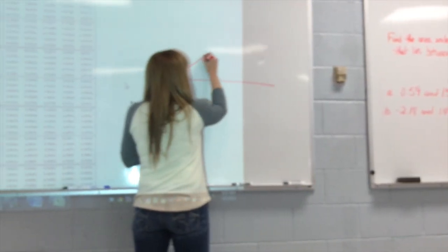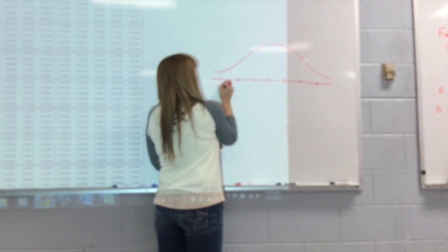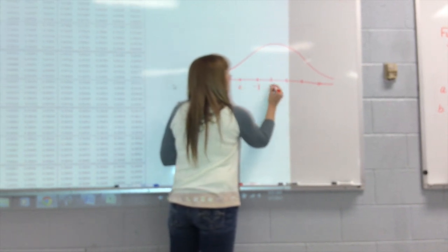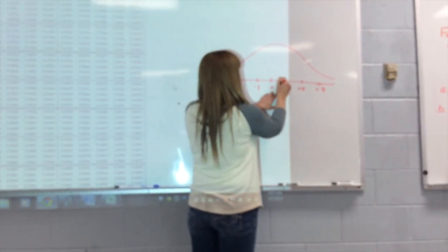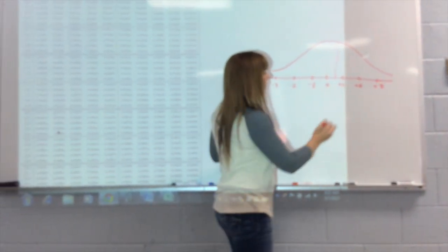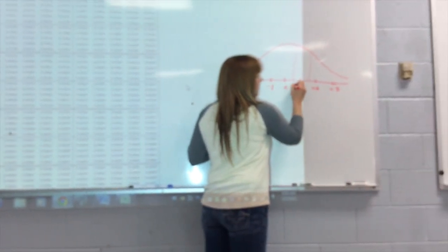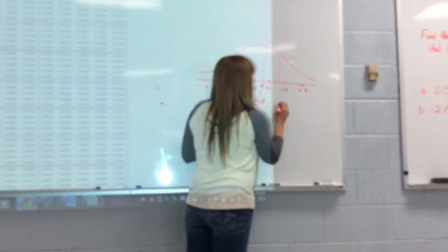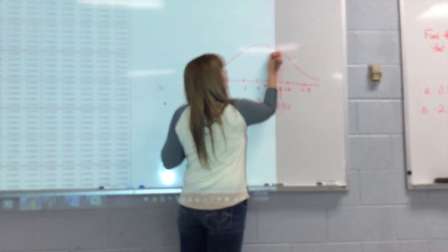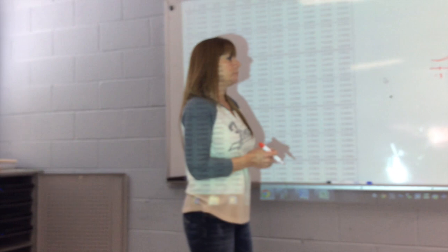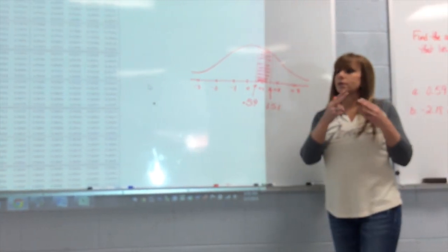To illustrate what's going on, I want to find the area between 0.59, which is approximately here, and 1.51, which is approximately here. So I have in this spot 0.59, and in this spot I have 1.51. So I need to find this area. There's no way to use the table in one step, so I have to use it in two steps.